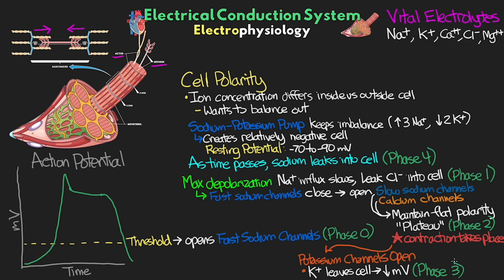Phase 3 eventually leads to a negative charge again for the cell, effectively repolarizing it. Once we get back to that resting potential — negative 70 to negative 90 millivolts — all the channels will have been closed. Then we have our sodium-potassium pump that goes back to work, and this process starts all over again with that slow increase of phase 4.